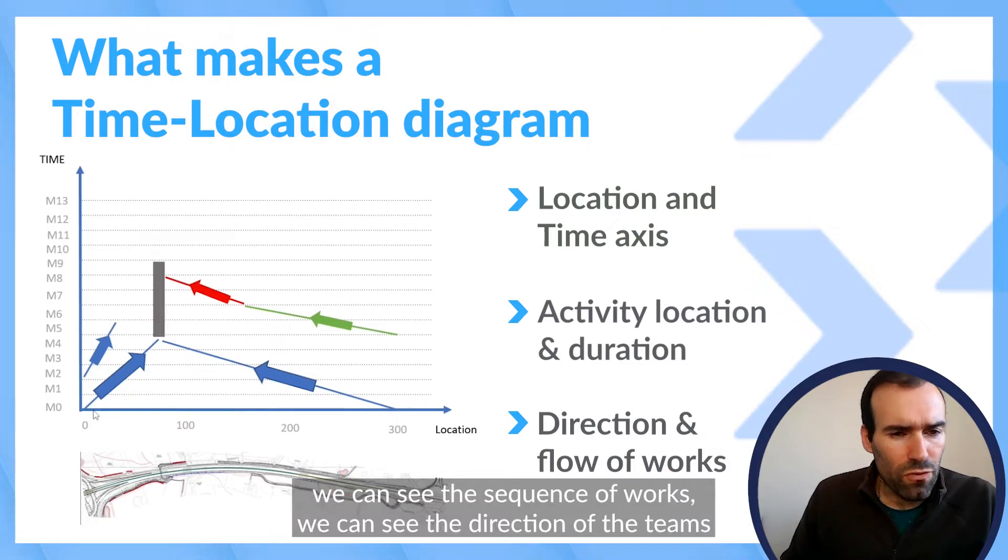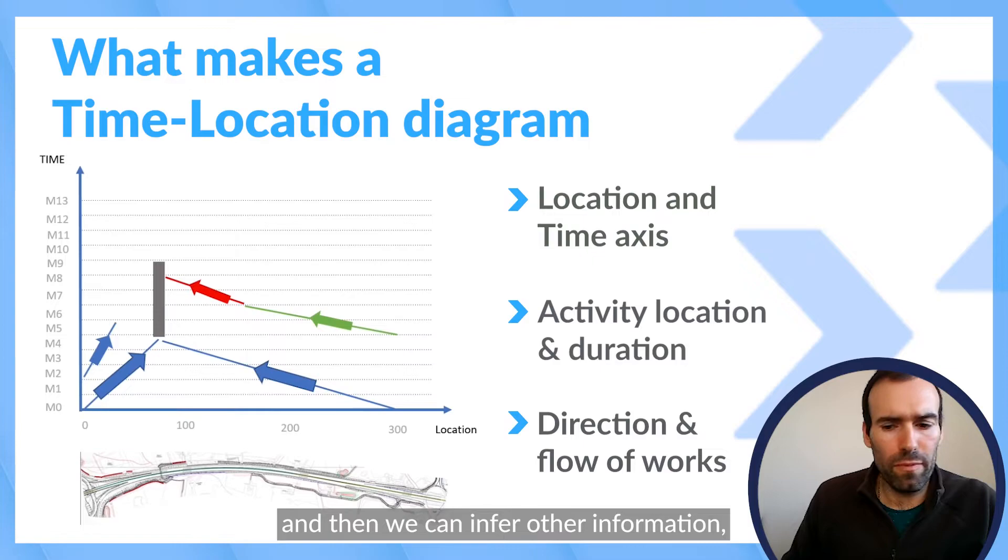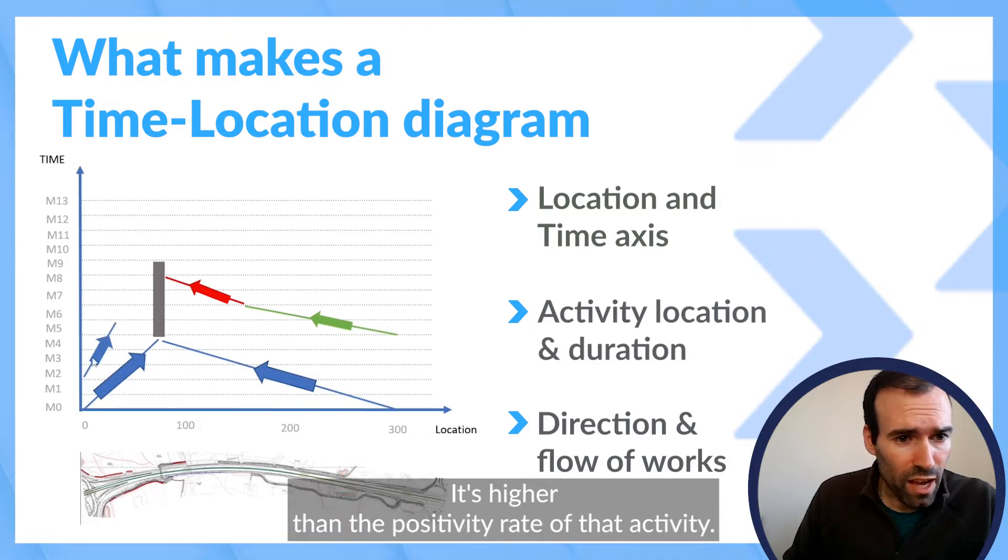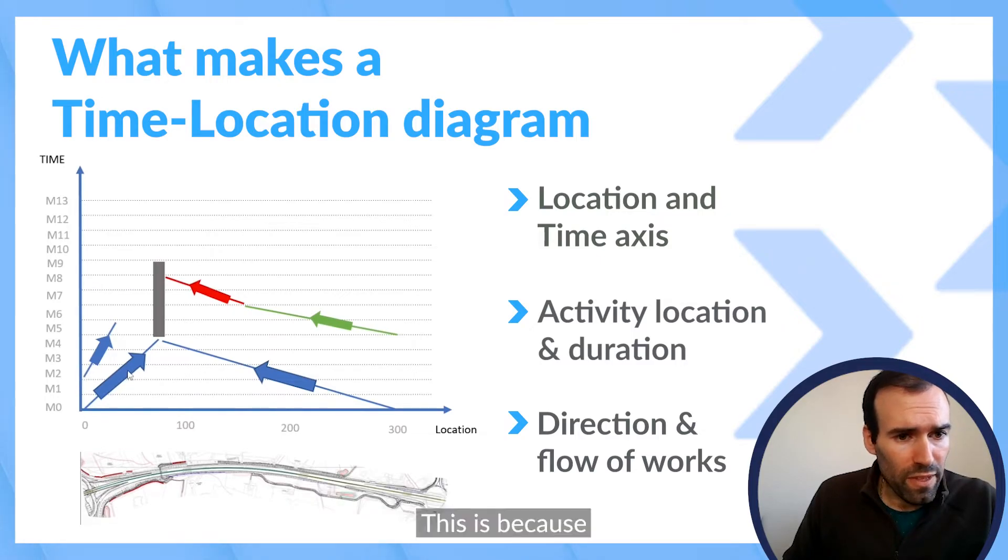We can see the sequence of works, we can see the direction of the teams, and we can infer other information like the productivity rate of this activity is higher than the productivity rate of that activity. This is because